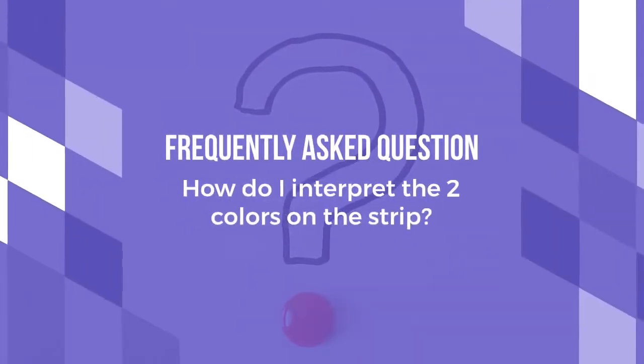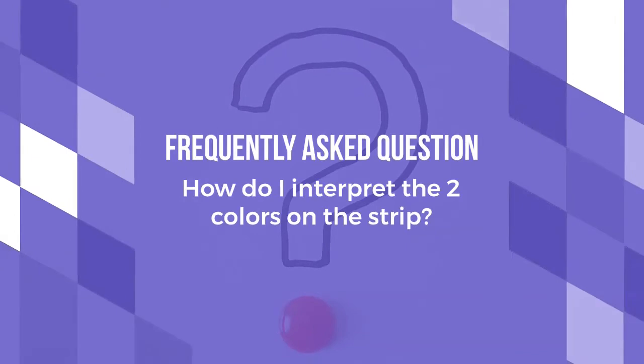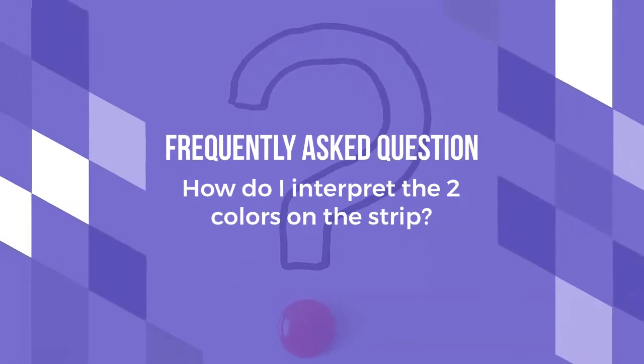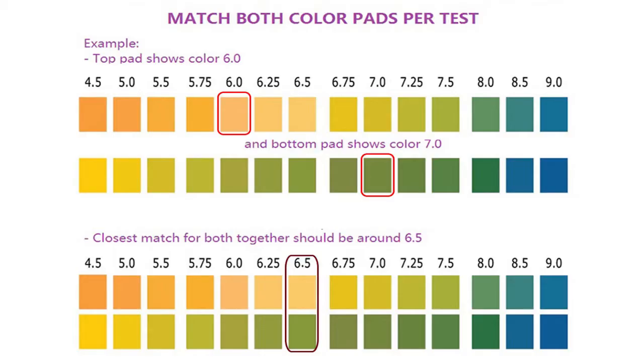A frequently asked question with pH test strips: How do I interpret the two colors on the strip? The answer is, you will have to match both colors to the color chart. For example, the top pad shows a color of 6.0 and the bottom pad shows a color of 7.0. The closest match for both colors together should be 6.5.